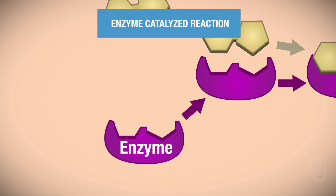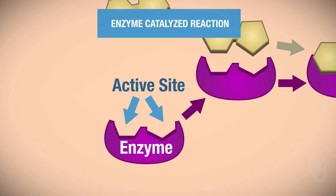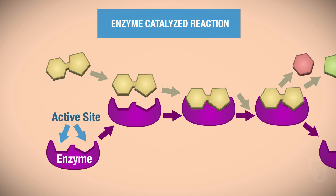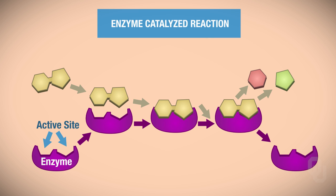We'll go ahead and label these. This is the enzyme. And if you notice on the enzyme, this particular enzyme actually has two different active sites. Not all enzymes will have two active sites. Not all enzymes will have one active site — they could have more than one active site. So you have to have an enzyme for an enzyme-catalyzed reaction.